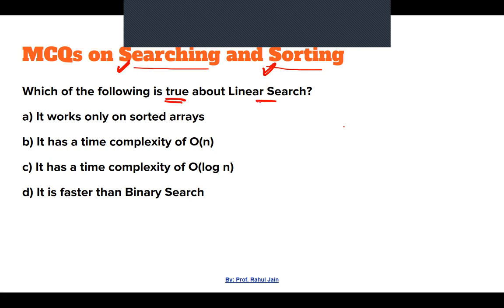Question 1: Which of the following is true about linear search? Options: it works only on sorted arrays, it has a time complexity of O(n), it has a time complexity of O(log n), or it is faster than binary search. It works only on sorted arrays — no, because it works on unsorted arrays too.